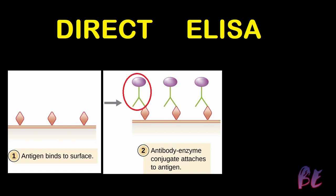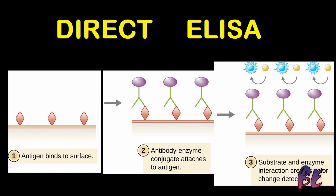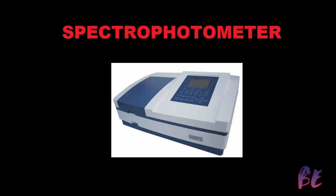The whole red circle shows the antibody-enzyme conjugate, and the arrow is showing the enzyme. Then substrate is added to the microwell plate, and this substrate and enzyme react with one another and create a color change. This color change can be detected by a spectrophotometer.